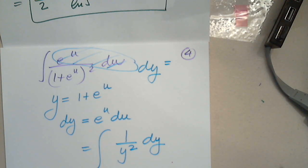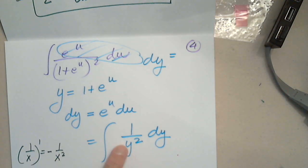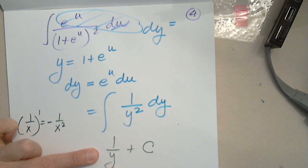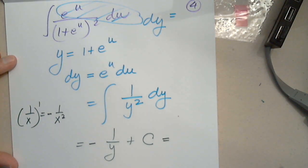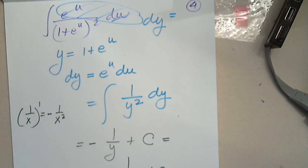We talked about this function before — 1 over y squared is the derivative of negative 1 over y. So the integral is negative 1 over y plus constant C. When I differentiate negative 1 over y, I get negative 1 over y squared; with the negative in front, that becomes positive 1 over y squared. I have to go back to the original variable since it's an indefinite integral, giving negative 1 over 1 plus e to the u plus C.